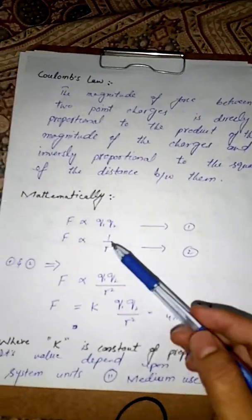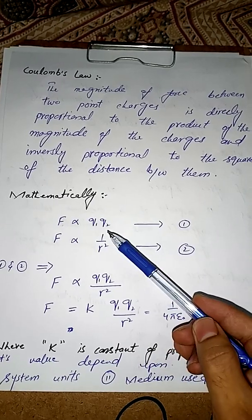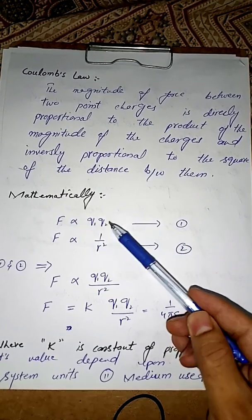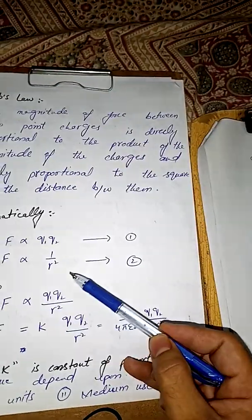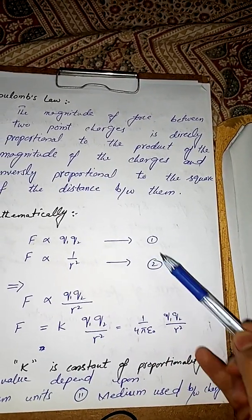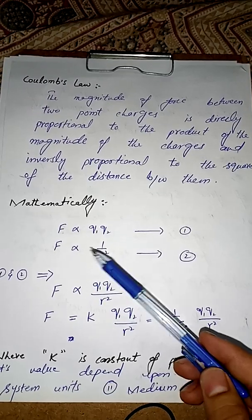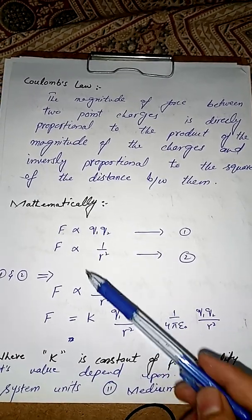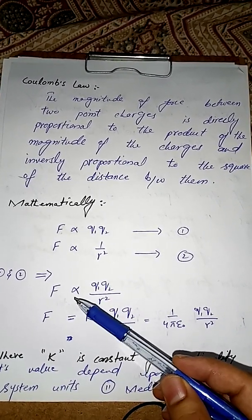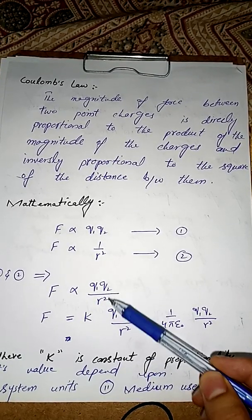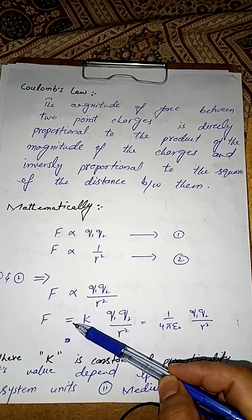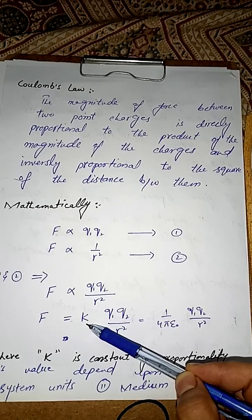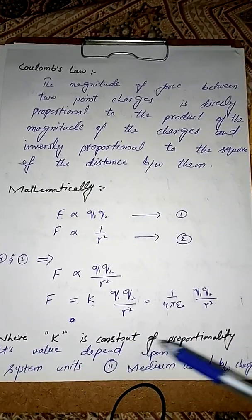Mathematically, we can write Coulomb's Law as: F is directly proportional to the product of the charges q1 and q2, and inversely proportional to the square of the distance r. Combining both equations, force is directly proportional to q1·q2 divided by r². We can replace the proportionality sign with equality and a constant k.